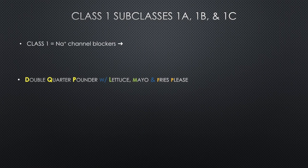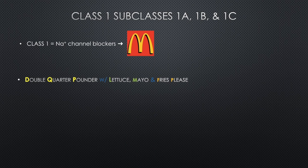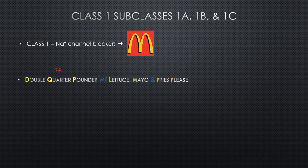Let's quickly go over the class one subclasses: 1A, 1B, and 1C. As you'll recall, class one are your sodium channel blockers, associated with McDonald's because their food is high in sodium. So let's make an order at McDonald's: a double quarter pounder with lettuce, mayo, and fries, please. This mnemonic helps you memorize the medications that fall within each subclass, with the yellow letters representing class 1A medications.